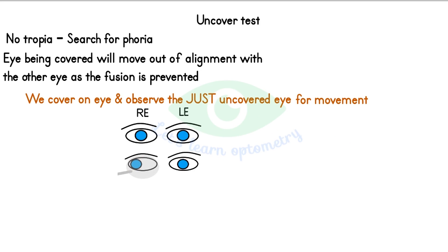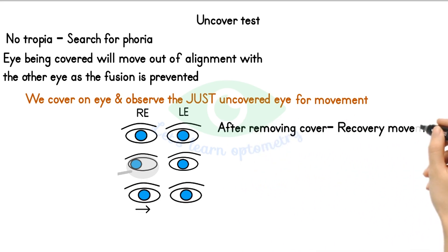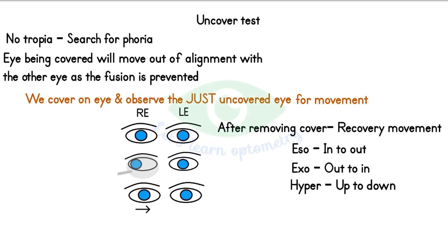After we remove the cover, we need to observe the just-uncovered eye — in this case the right eye — for any movement. After removing the cover we see a recovery movement, which moves in the opposite direction to re-establish binocular fixation. That is from inwards to outwards in esophoria, outwards to inwards in exophoria, and so on.